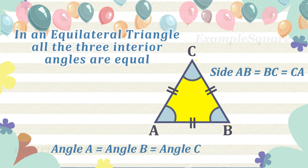Since the sum of the three interior angles of a triangle is always 180 degrees, and in an equilateral triangle all three angles are equal, each angle is equal to 180 degrees divided by 3, that is 60 degrees.